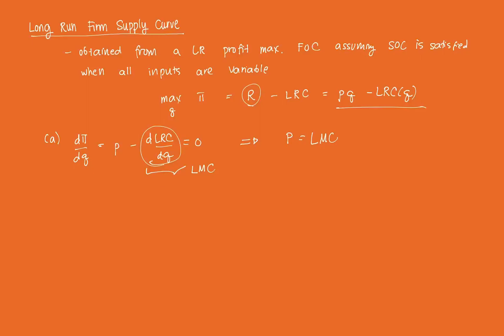Since your long-run marginal cost is some function of q, you can solve for an optimal level q*, which is some function of p. That's our first-order condition — price equals long-run marginal cost. It's very similar to what we found in the short-run, wherein p equals SMC.